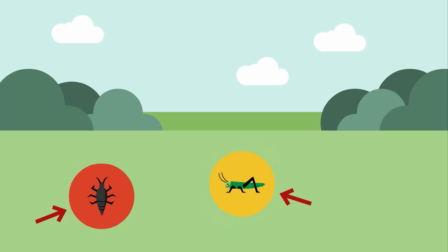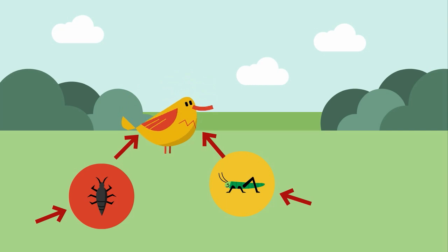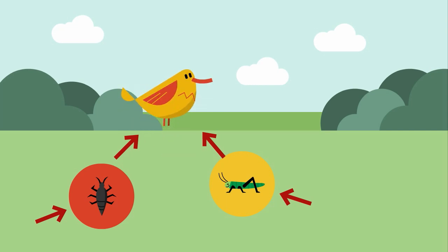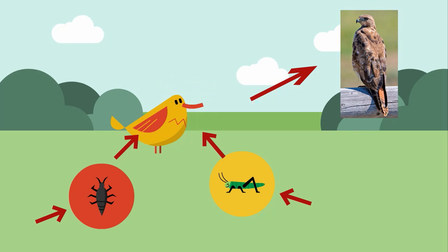A bird is found on Level 3. It is an omnivore and it eats insects and some seeds. Level 4 is a merlin, which is a small hawk that would feed on the smaller birds. The merlin is a tertiary consumer and is a carnivore that feeds on songbirds. There is not a true apex predator in this food chain.